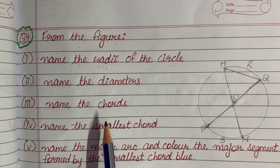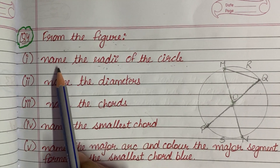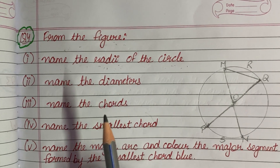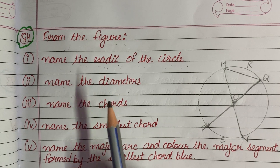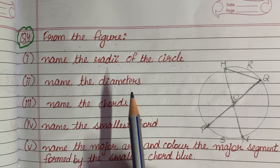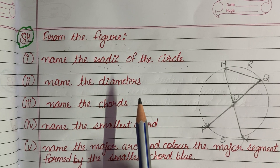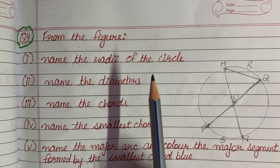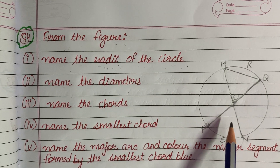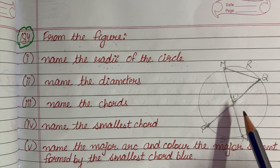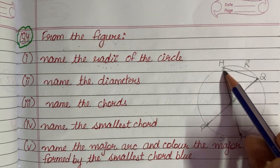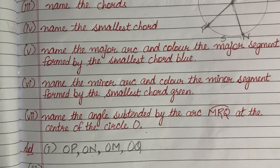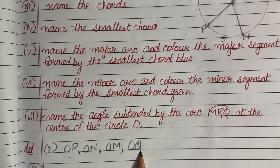Question number 4 says: from the figure, name the radii of the circle. The distance from any point on the circumference to the center is the radius. The radii shown in the figure are OP, ON, OM, and OQ.